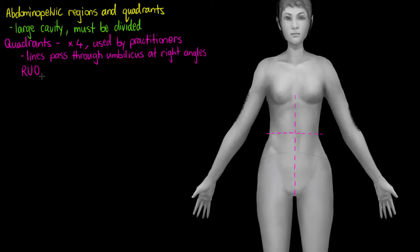And these quadrants are going to be quite easy to remember. It's as simple as right upper quadrant, so RUQ right upper quadrant. LUQ for left upper quadrant. RLQ standing for right lower quadrant. And of course we're going to have an LLQ for our left lower quadrant.